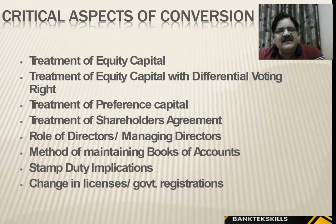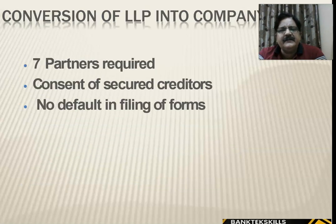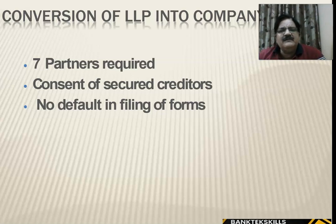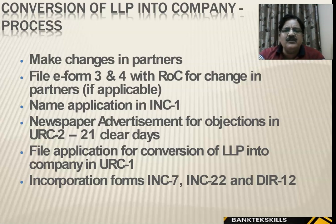Critical aspects of conversion include: treatment of equity capital, differential voting rights, treatment of preference capital — all to be addressed in the LLP agreement. Stamp duty implications and changes in licenses and government registrations will also need to be taken care of. A minimum of 7 partners is required for conversion of LLP into a public limited company, consent of security creditors is needed, and there should be no default in filing of forms.